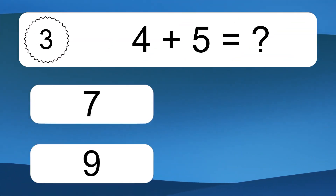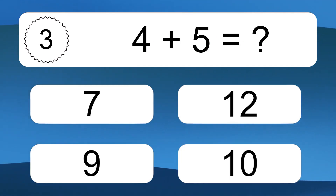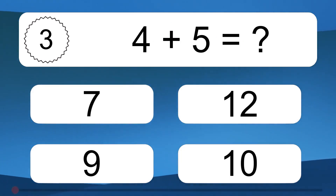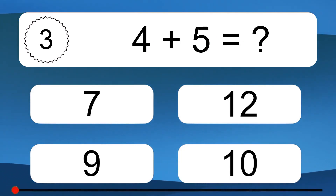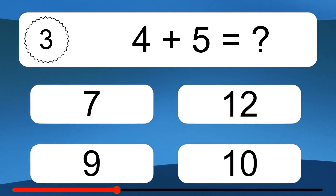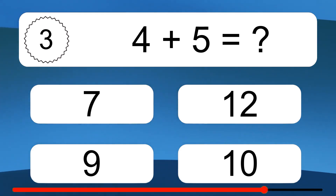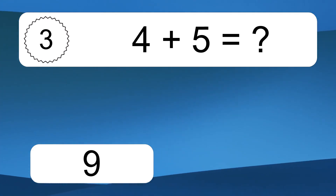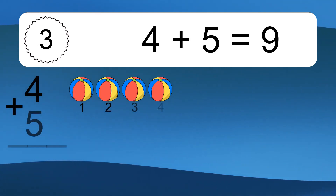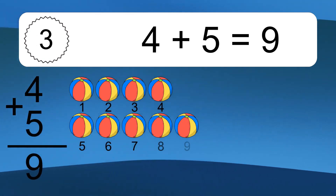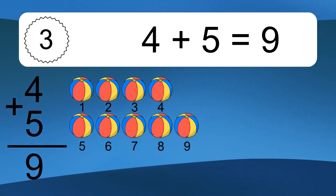4 plus 5 equals what? 4 plus 5 equals 9.